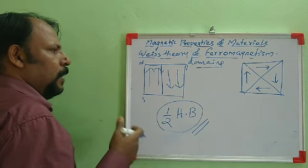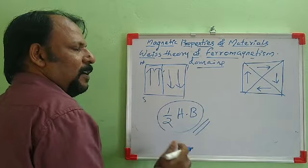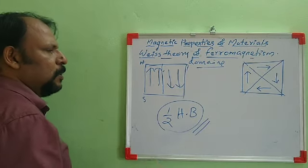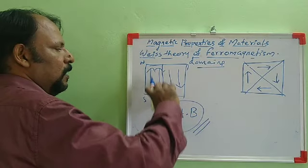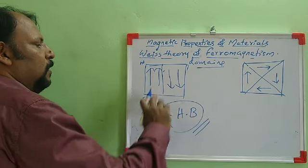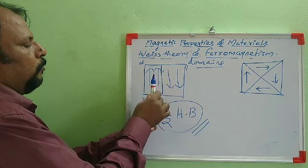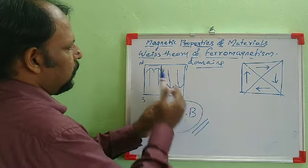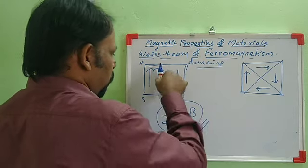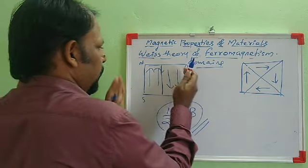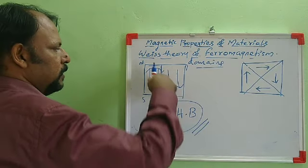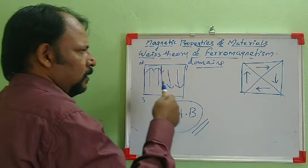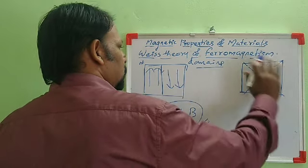There is also anisotropic energy — certain directions allow easy magnetization while others are difficult. The difference in energy determines the boundary between regions. The magnetic moment does not change abruptly between domains; it gradually changes from one direction to another through a domain wall. The width of the wall is determined by the balance between anisotropic energy and exchange energy.